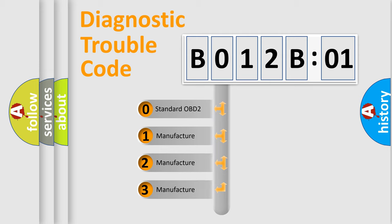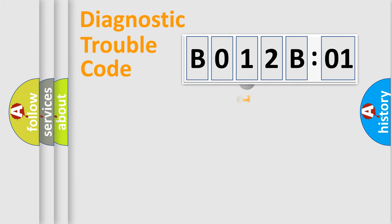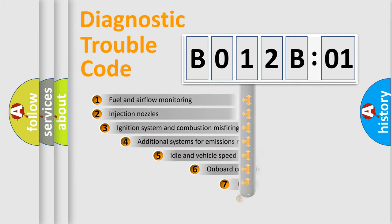If the second character is expressed as zero, it is a standardized error. In the case of numbers 1, 2, or 3, it is a more prestigious expression of the car-specific error.